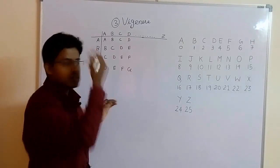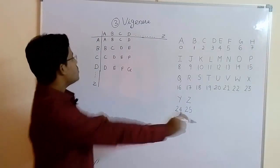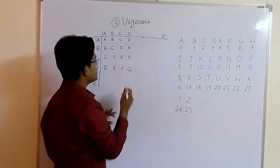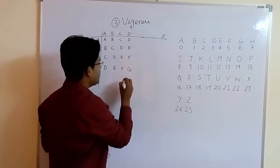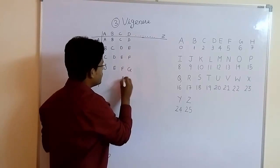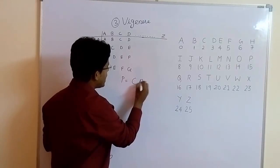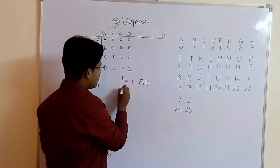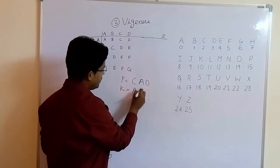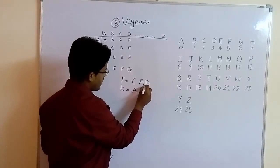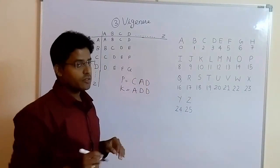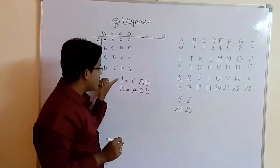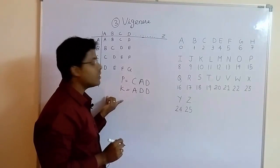Now let us solve the example using the Vigenère cipher method with the help of this Vigenère table. Suppose we are having plain text equal to C, A, D and key equal to A, double D. Remember students, if the length of the key is less than the plain text, you cannot solve this example.